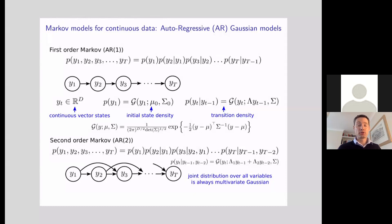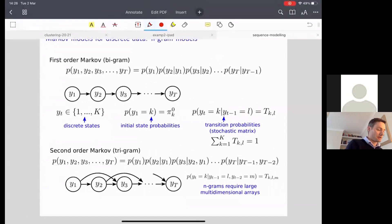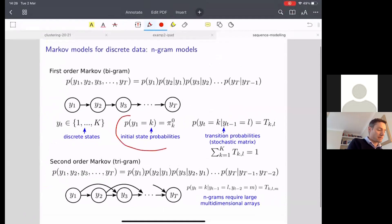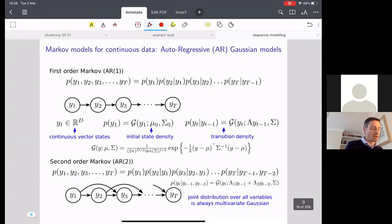This slide should be very familiar to you. It has exactly the same layout as our n-gram model slide where we just had to specify two things: what the initial state probability was for the model and what the transition probability was. If you compare that to this slide, we're also going to specify an initial state probability and a transition density. Everything else is pretty much the same.